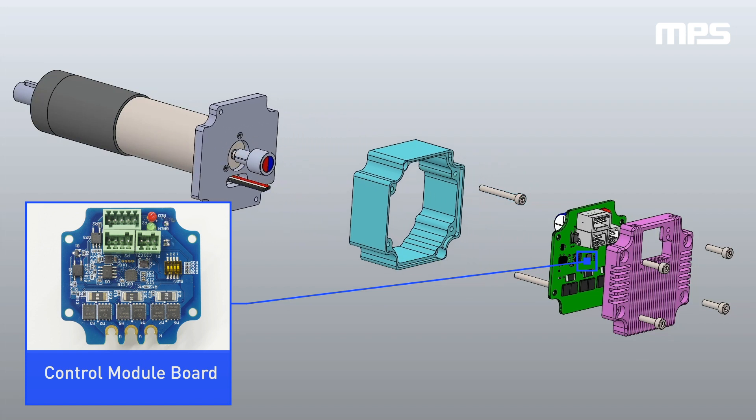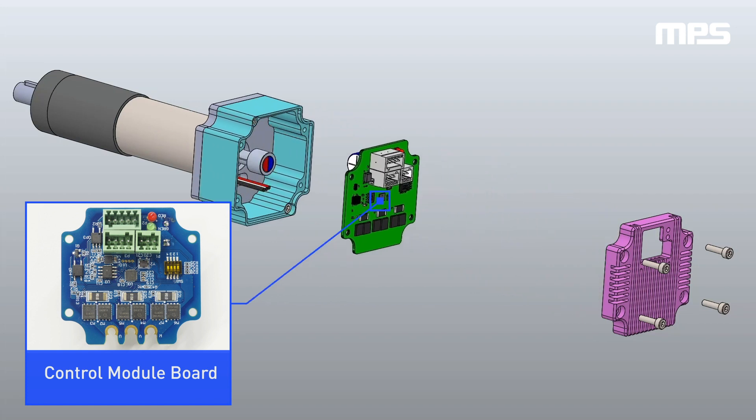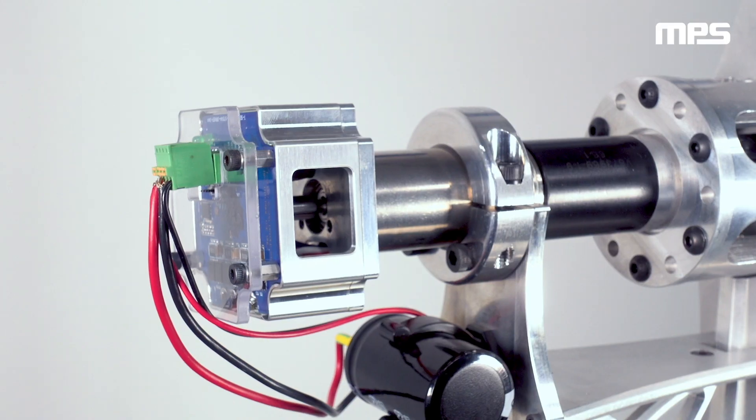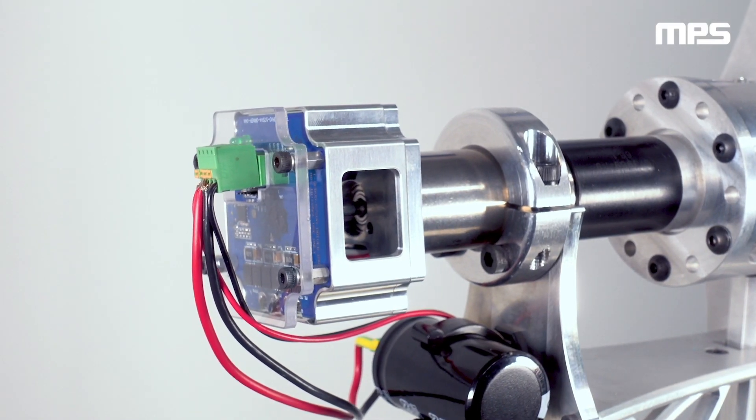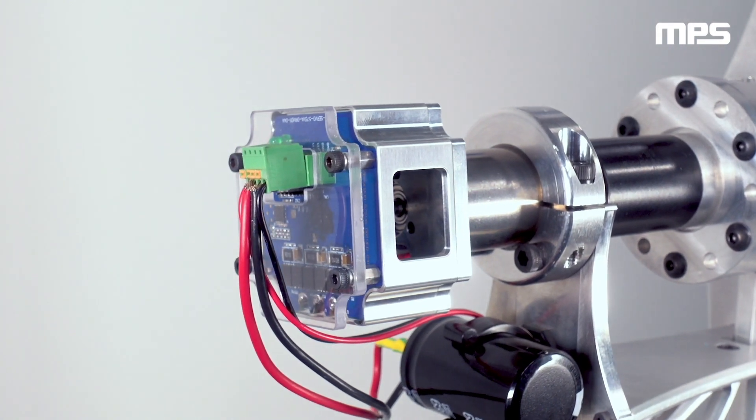As shown here, we could transfer the MPS MMP module and housing from the NEMA 23 MPS smart motor directly onto the 30 mm body with a simple adapter plate and associated magnet holder.